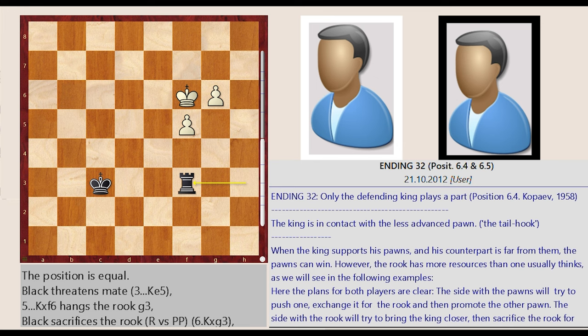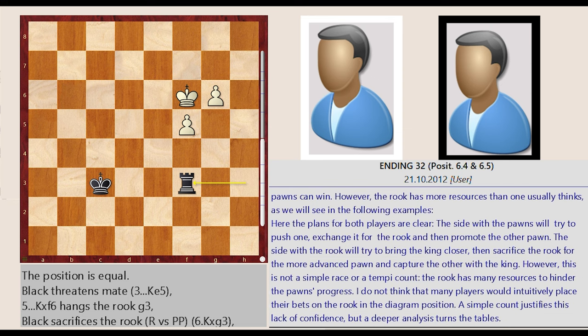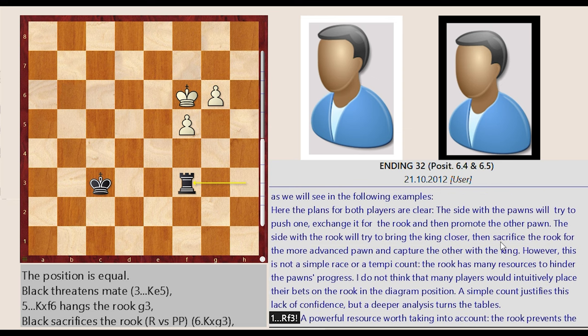However, the rook has more resources than one usually thinks, as we will see in the following examples. Here the plans for both players are clear. The side with the pawns will try to push one, exchange it for the rook and then promote the other pawn. The side with the rook will try to bring the king closer, then sacrifice the rook for the more advanced pawn and capture the other with the king.